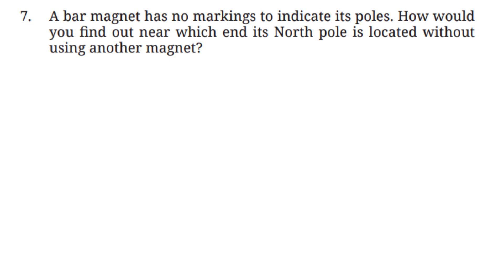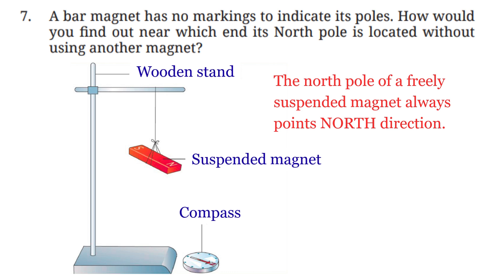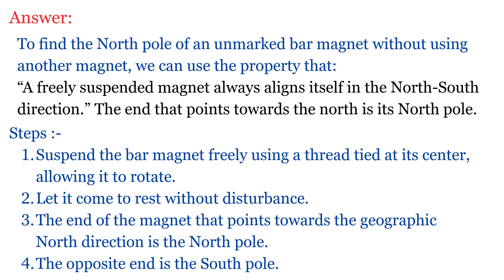Question 7: A bar magnet has no markings to indicate its poles. How would you find out where its north pole is without using another magnet? A freely suspended magnet always aligns in the north-south direction, and the end that points towards the north is its north pole. Suspend the bar magnet freely using a thread tied at its center, allowing it to rotate, and let it come to rest. The end pointing towards the geographic north is the north pole, and the opposite end is the south pole.